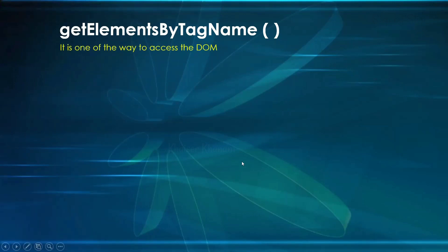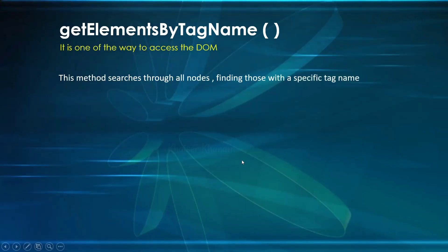It is also one of the ways to access the DOM. This method will be searching through all the nodes and finding those with a specific tag name. Suppose if I am having two H1, then it is going to select both the H1. As it is searching all the nodes, the performance will be very heavy due to which the JavaScript engine has to do more processing work. So if you really need this, then you can use getElementsByTagName. If you are having only one or two tags, then it is fine — or else, you can go with other selectors.